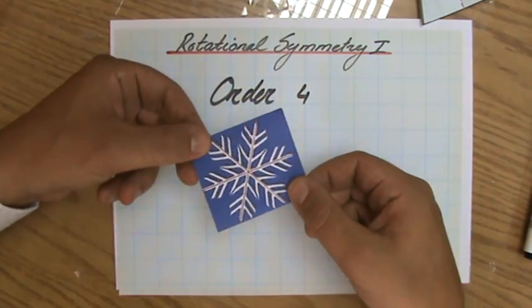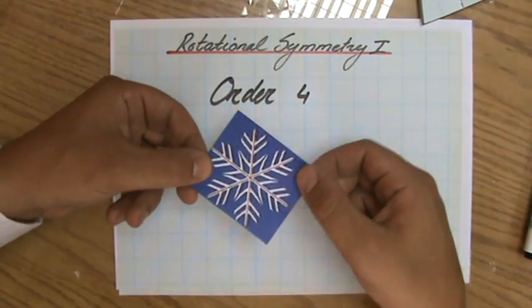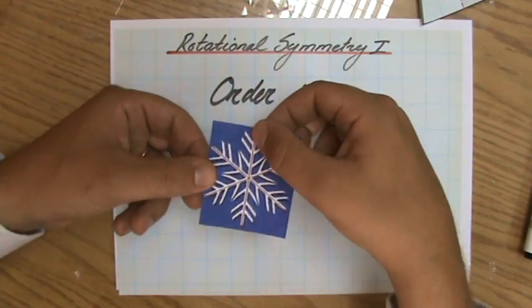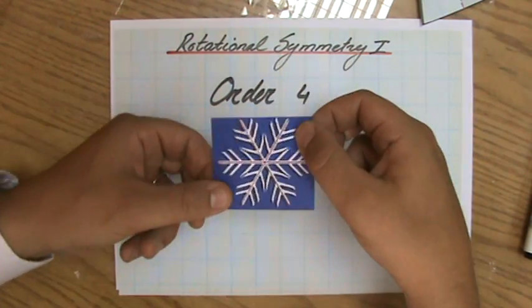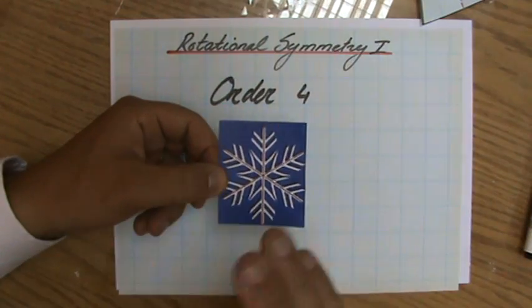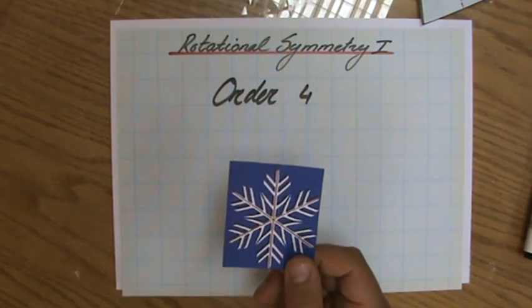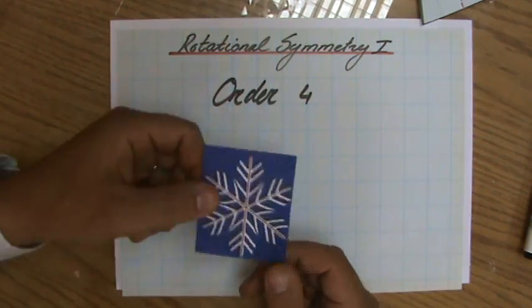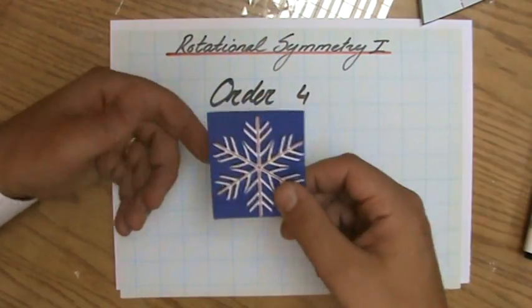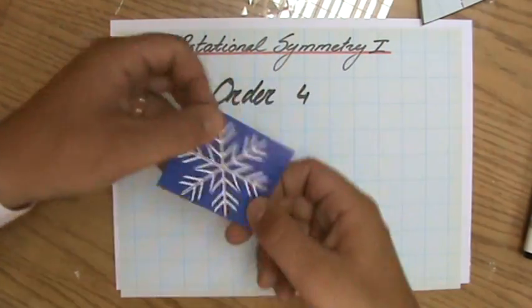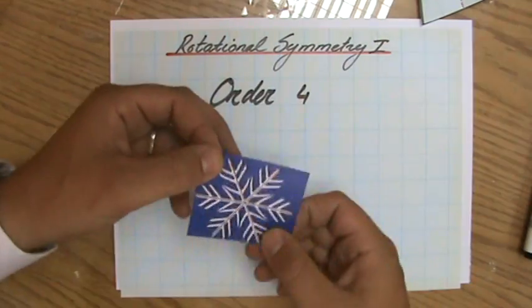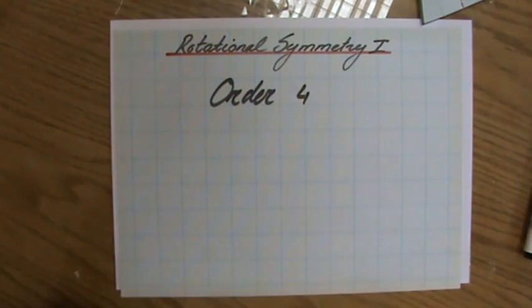Have a look. One, two, three, four, five, six. Back in its original position. So it has a rotational symmetry of order six. And every time when I assess my students on rotational symmetry, when I see them turning their paper around, I know they're doing the rotational symmetry now.